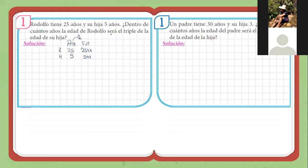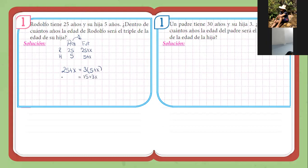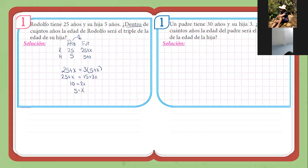La edad de Rodolfo será el triple de la edad de su hija. Se refiere a que 25 más X sería la edad de Rodolfo cuando haya pasado X años, y esto vendría a ser el triple de la edad de su hija en ese momento. Resolvemos: acá pasamos a restar, sería 10. Pasamos a restar los X. Por lo tanto, X sería 5. Y justo esta es nuestra pregunta: ¿dentro de cuántos años? Dentro de 5 años. La clave está en que 'será el triple de la edad de su hija', eso nos ayudó a plantear la ecuación.